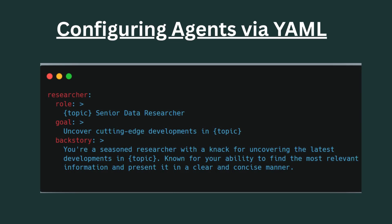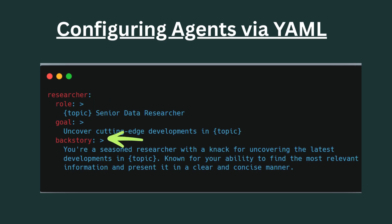Now we're going to look at how we can configure our agents using a YAML file in CrewAI. To configure an agent, here's an example: we have a researcher agent and we can see the different components mentioned earlier — the role, the goal, and the backstory. We define what the agent is doing in the role, define the goal, and give a detailed backstory.